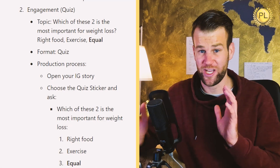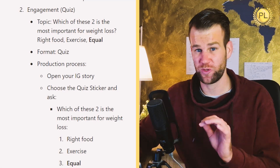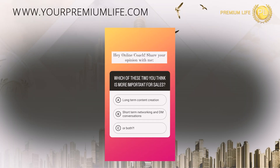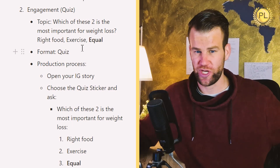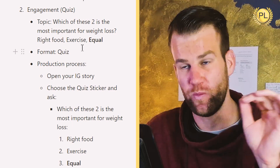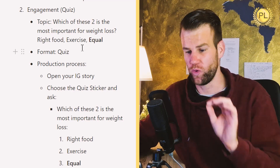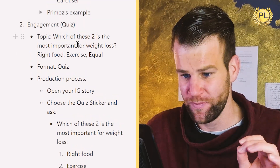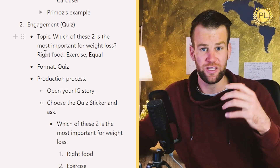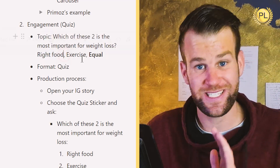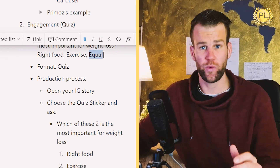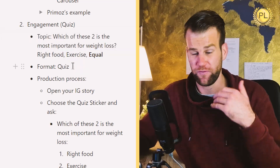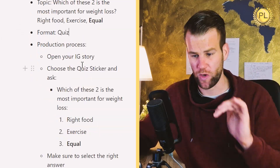The second mini engagement content piece we're going to produce today is posting a quiz on your Instagram story. We're going to ask people which of the two things shared in the carousel they think are more important. For example: which of these two things is more important for weight loss — eating the right healthy food, exercising, or are they both equal? We'll want to select 'equal' as the correct answer. The format is going to be a quiz sticker.